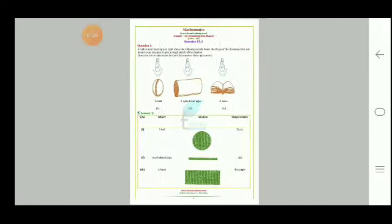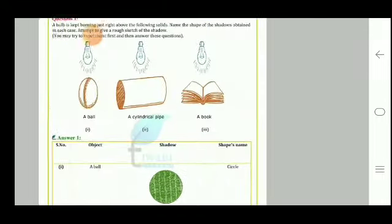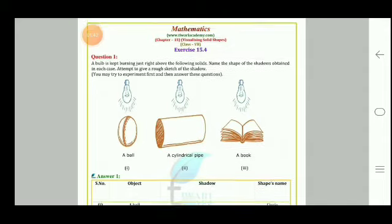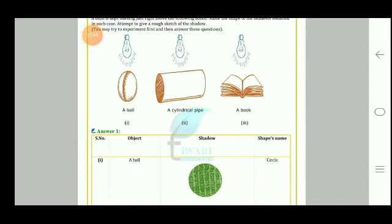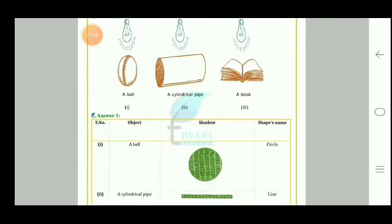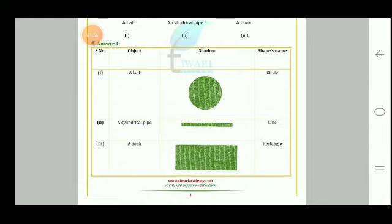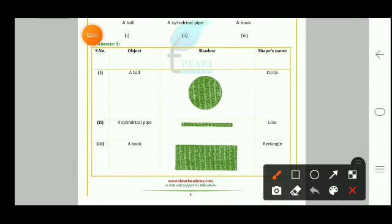Now for Exercise 15.4: a bulb is kept burning just above the following solids — name the shape of the shadow in each case and give a rough sketch. For a ball, with the light above, we get a circular shadow.